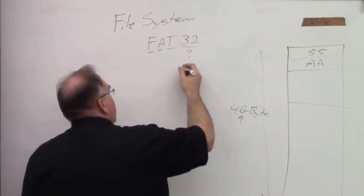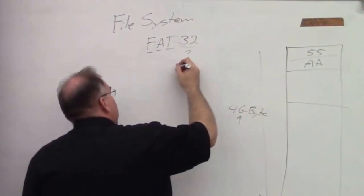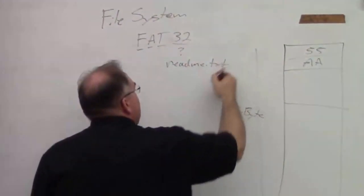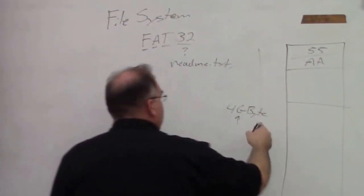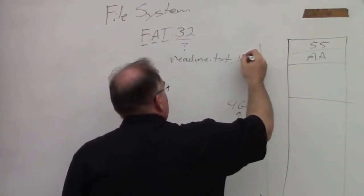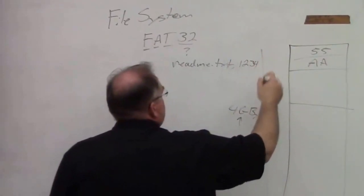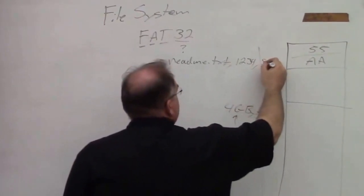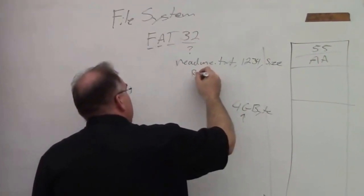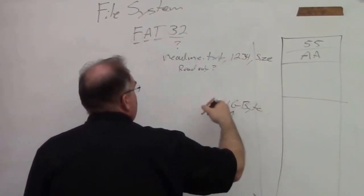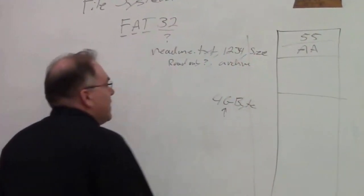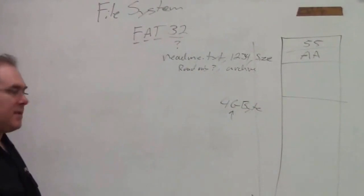what I'm going to store is a file name, like readme.txt, and I'm going to store the physical memory location, who knows what it's going to be, one, two, three, four, and the size, and some other information, like is it read only, and there's something called an archive bit, which can be used to track has it been backed up, or some different things like this.